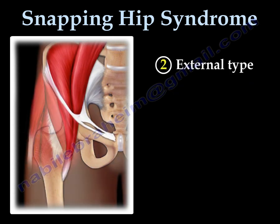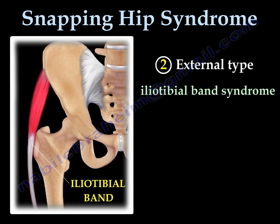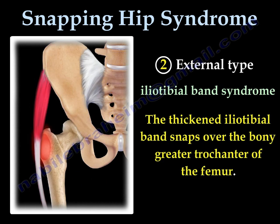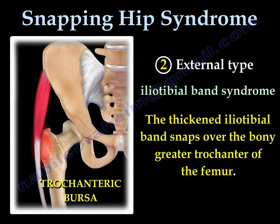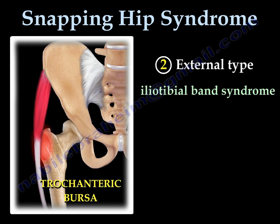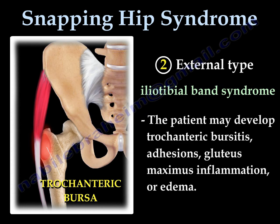The external type is called iliotibial band syndrome. The iliotibial band is thickened and it snaps over the bony area of the greater trochanter of the femur. The patient may develop trochanteric bursitis, adhesions, gluteus maximus inflammation, or edema.